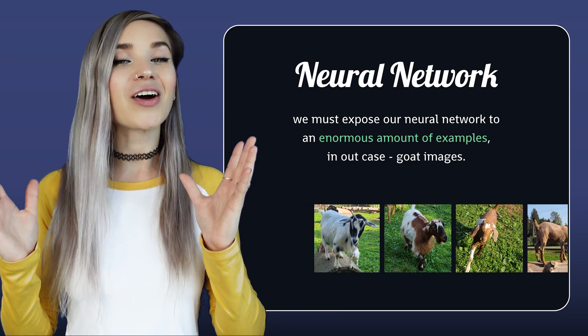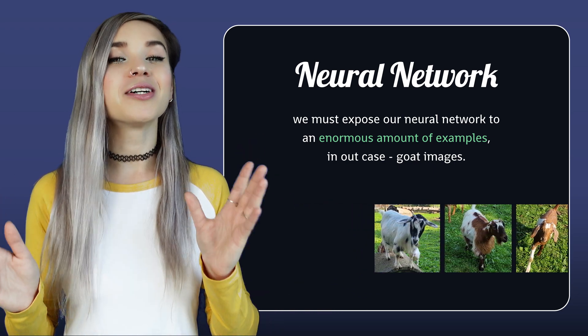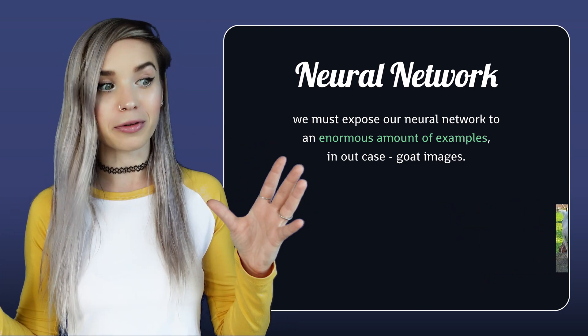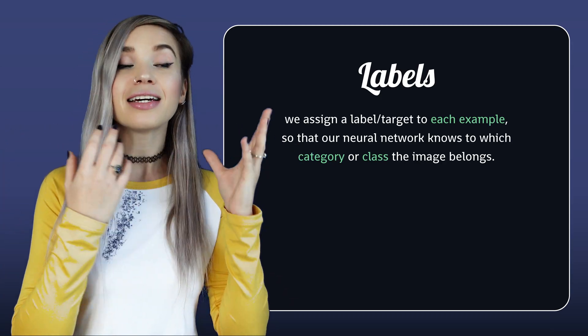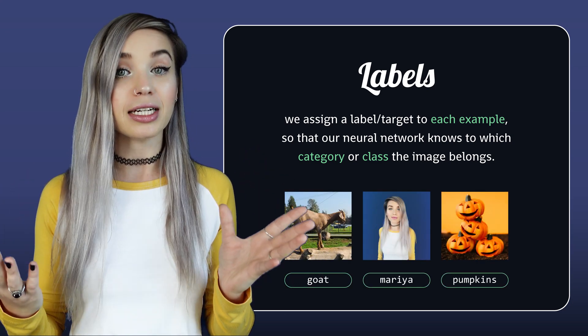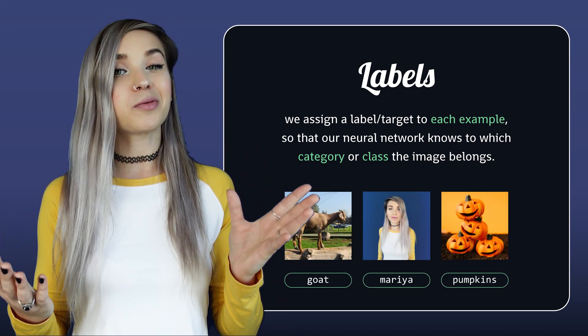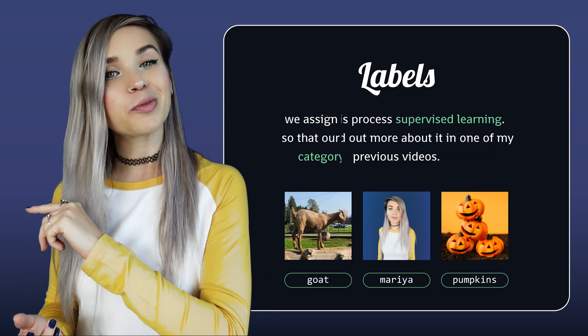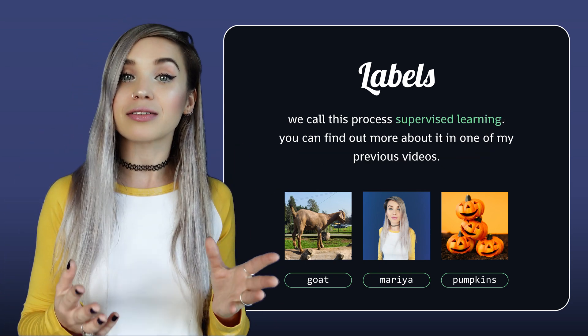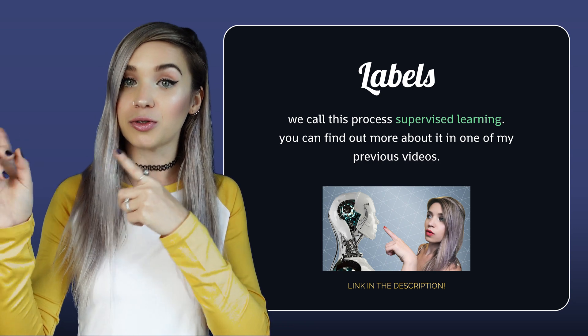But that's not all. Our examples also need to be interpreted properly. That's why, very often, each example will have something called a label, or a target, that tells our neural network to which category it belongs. We call this process supervised learning, and if you want to find out more about it, you can check out my previous tutorial.